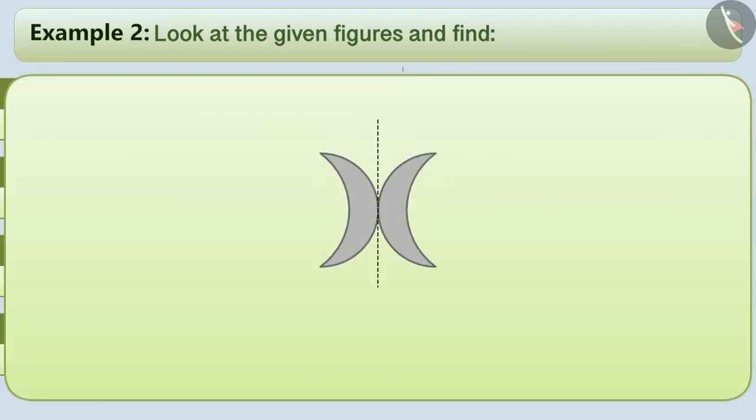If we talk about figure B, then by folding it vertically into two halves, the two parts cover each other completely. Similarly, by folding it horizontally into two parts divides the figure symmetrically. There are no other lines which divide the figure into two equal halves.